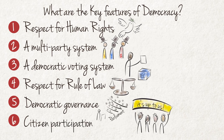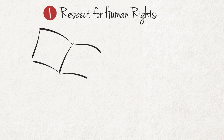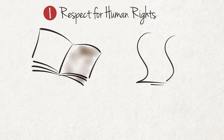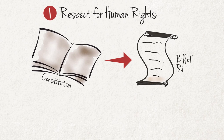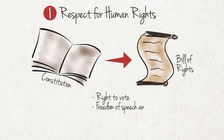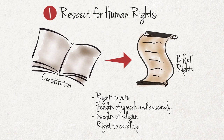Let's look at each of the key features mentioned above. Firstly, one of the most important features of democracy is the respect for some basic human rights. Most democracies have a constitution that outlines the human rights of each individual. They usually include basic rights that secure democracy, including the right to vote, freedom of speech and assembly, freedom of religion, and the right to equality.